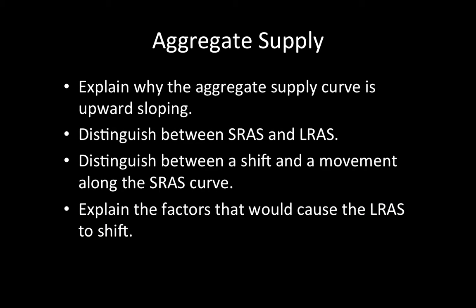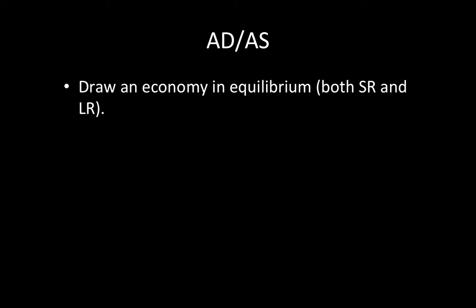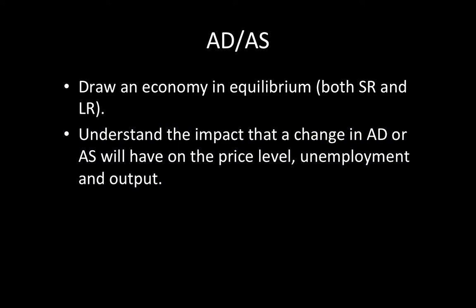I would suggest you be familiar with both Keynesian and neoclassical models, and distinguish between a shift and a movement along the short run aggregate supply curve. Explain the factors that would cause the LRAS to shift. When you combine them together, try drawing an economy in equilibrium — in short run equilibrium and long run equilibrium. Understand the impact that a change in aggregate demand or aggregate supply will have on the price level, unemployment, and output.